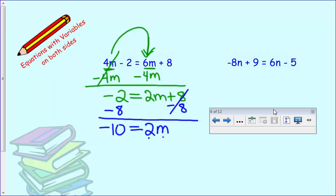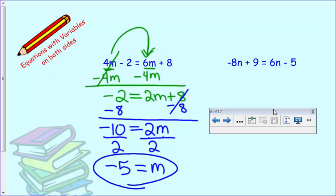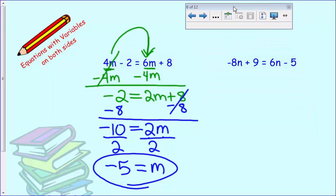Well, 2 and m right now are multiplied together. To undo multiplication, we are going to divide. So I'm going to divide the right side by 2. Got to do the same thing on the other side. So we get negative 5 is equal to m. And we can leave our answer like this. Go ahead and pause right now and see if you can solve the second equation up here. And then compare your answer to mine when we're done.